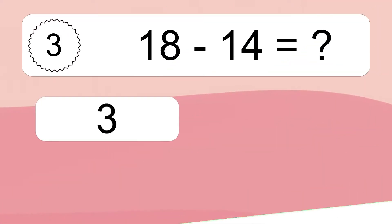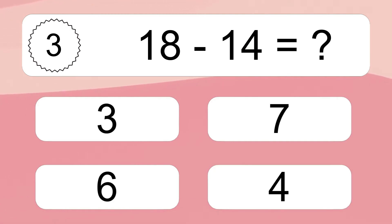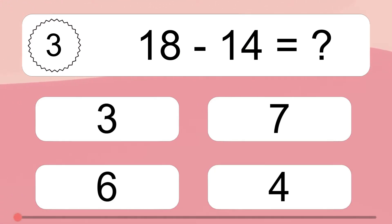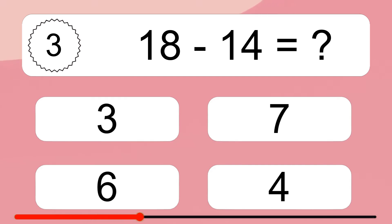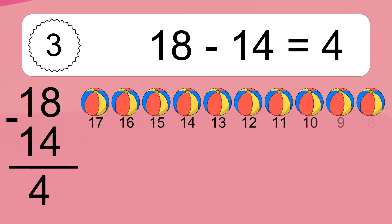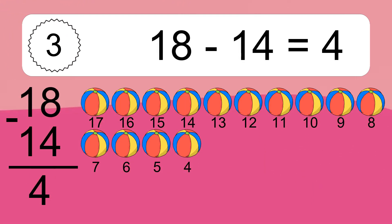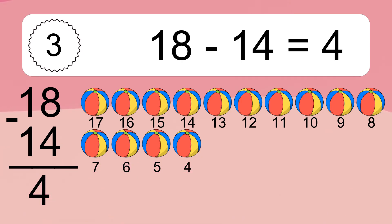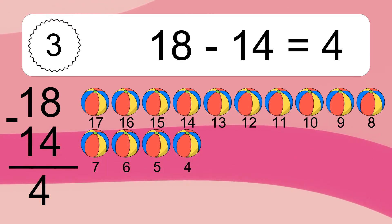18 minus 14 equals what? 18 minus 14 equals 4. Let's count it. 17, 16, 15, 14, 13, 12, 11, 10, 9, 8, 7, 6, 5, 4.